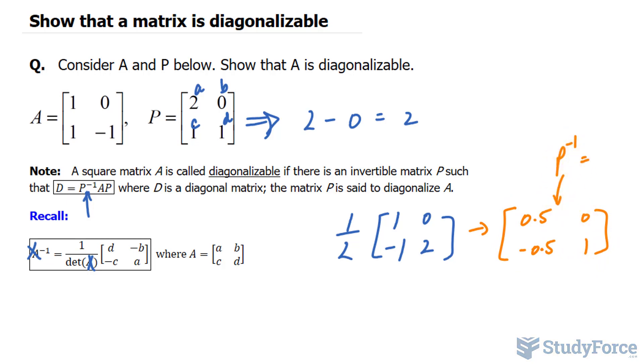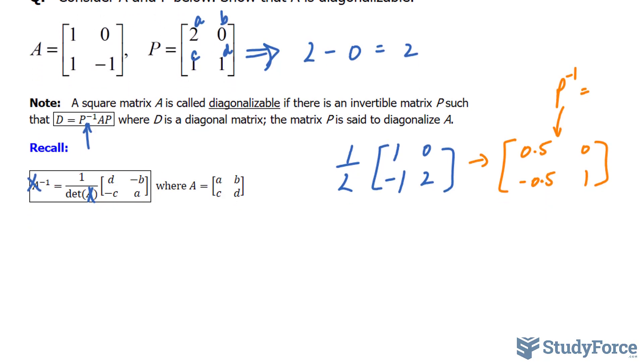Next, I'll be multiplying this matrix to look at the formula A. So we have 0.5, 0, negative 0.5, 1. That part is the inverse of P, times A, which is 1, 0, 1, and negative 1, times,